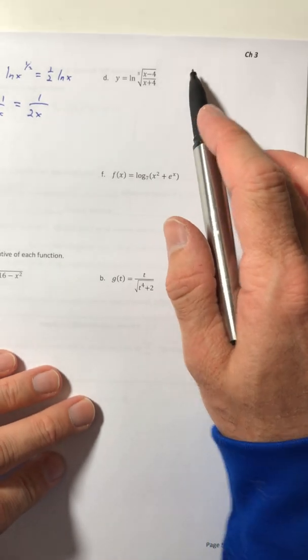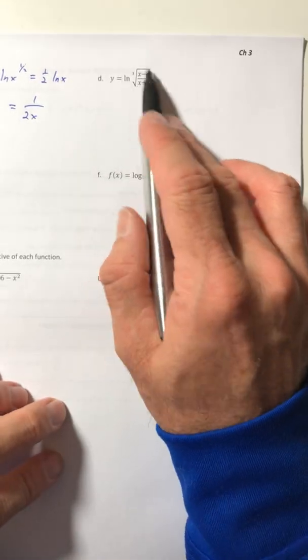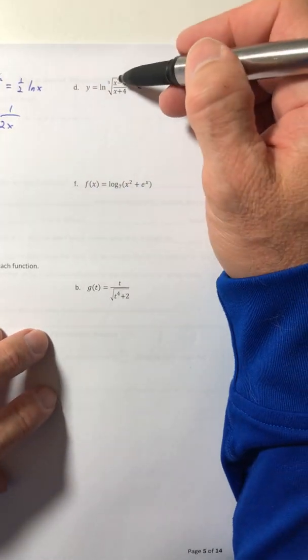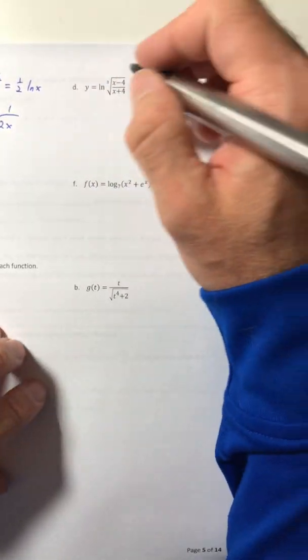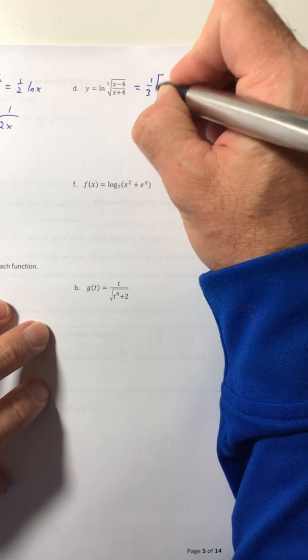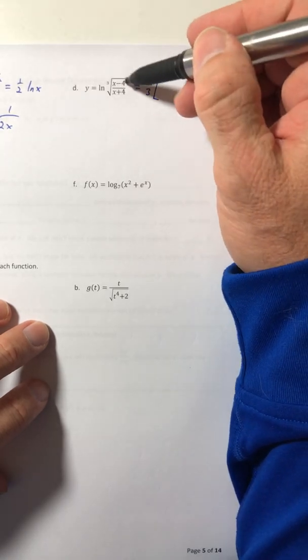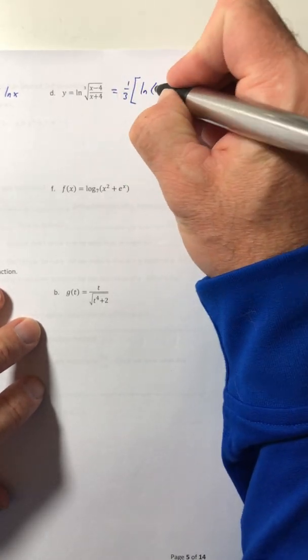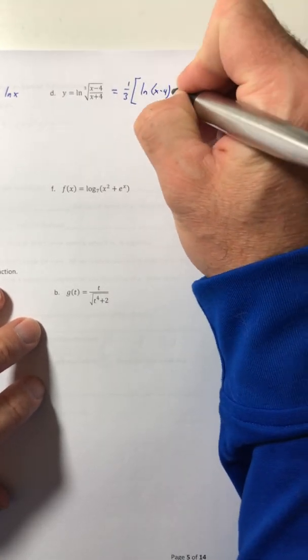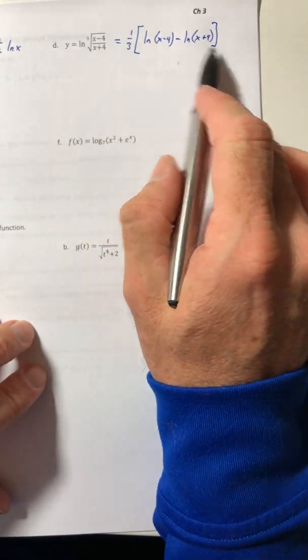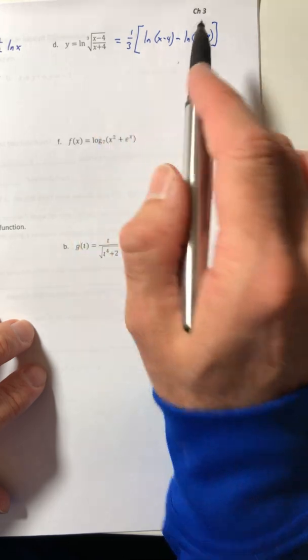So if you have these massive looking quantities like in this one, you can use log properties to rewrite it and kind of break it apart. So the cube root becomes a one-third. And then the quotient with logarithms means you get to subtract. So it'll be ln of x minus 4 minus ln of x plus 4. And then you can do the derivative of this as opposed to the derivative of that nasty looking thing there.